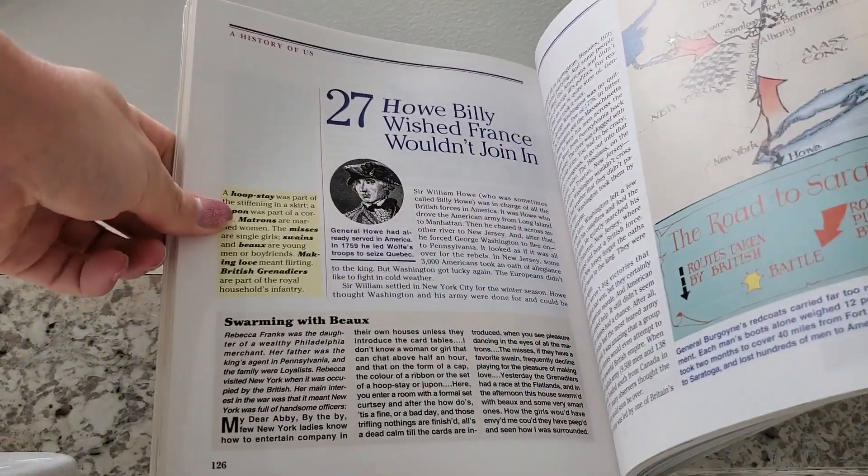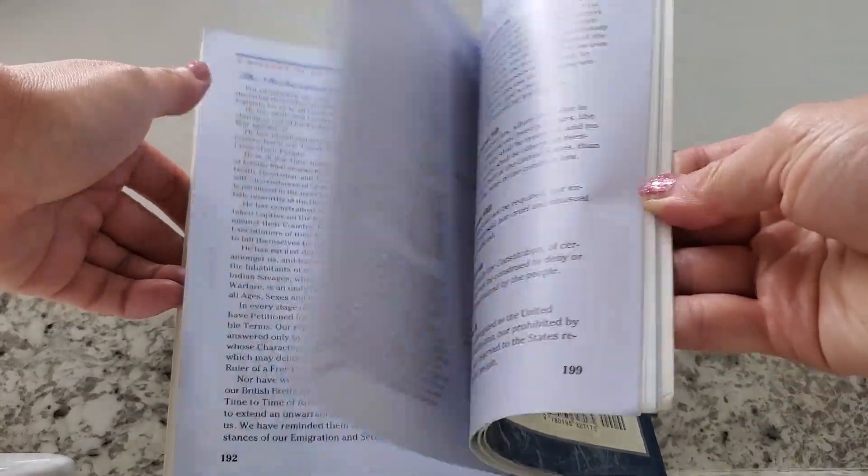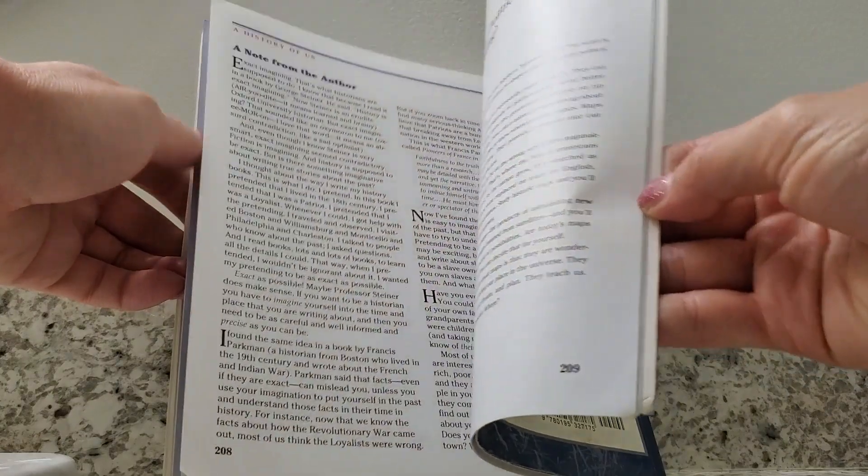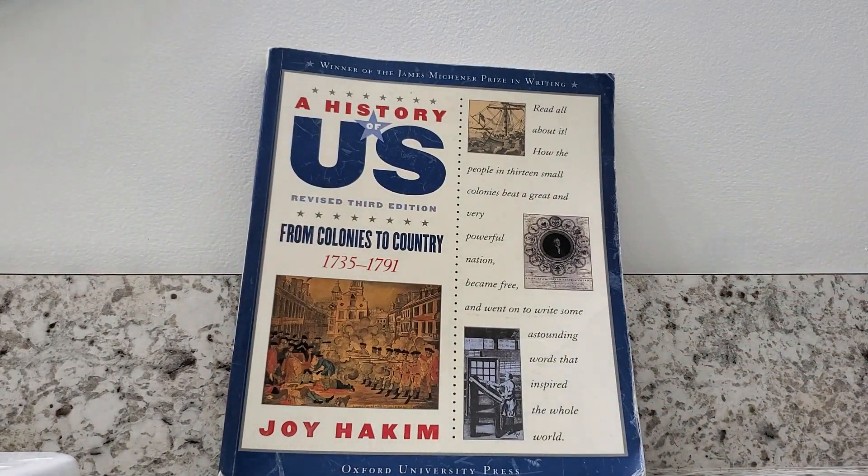There are a lot of different chapters in here. Right now we're up to chapter 27, and this book is about 200 pages. Highly recommend to others.